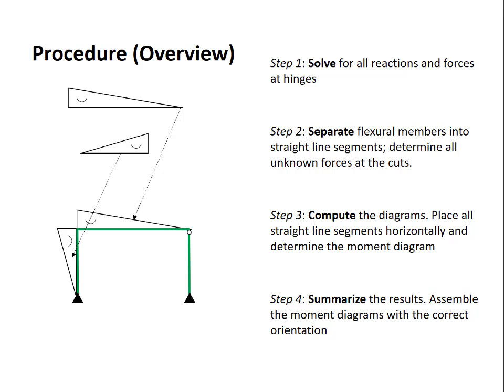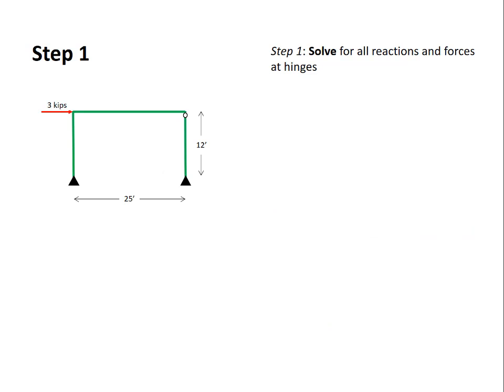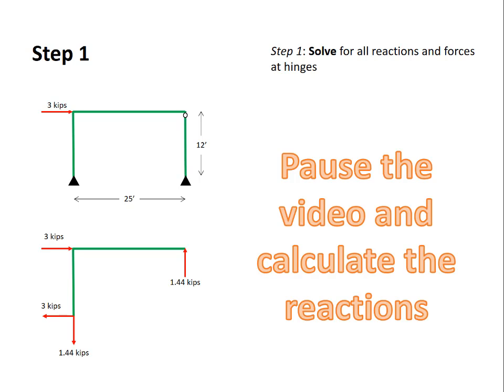Let's go through the same steps with the same structure but now putting numbers on the problem. So let's start once again at step one. Solve for all the reactions and the forces at the hinges. We would obtain the following free body diagram. It's assumed that you already know how to do this. So take a moment, pause the video and calculate these reactions. Make sure that you can obtain these values and that you can complete this step successfully.